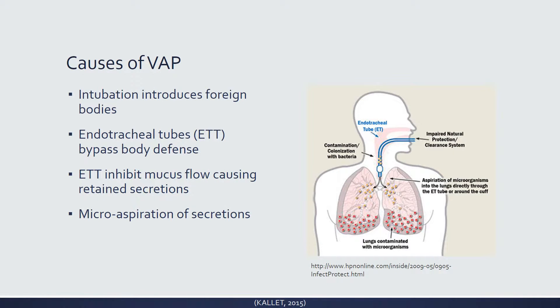In order to develop VAP, you've got to be intubated with an ET tube, and just having the ET tube in place can increase your chance of developing VAP. An intubation done at the roadside by emergency services, or in the patient's home after the patient already vomited and aspirated secretions, can lead directly to VAP. The ET tube bypasses the body's natural defenses, gives bacteria an entry point into the lungs, inhibits natural mucous flow, inhibits coughing, and can lead to retained secretions.